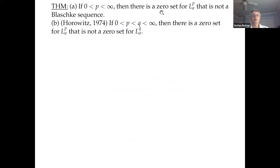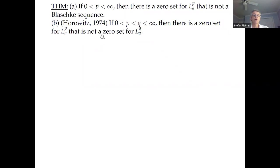If you go to the Bergman space, it's perhaps not surprising that there will be zero sets that are not Blaschke sequences — the spaces are bigger, so you get more functions. Horowitz showed that the condition for Bergman zero sets must depend on the index p, so for different indices p and q, the characterization of zero sets for LpA and LqA gives something different.